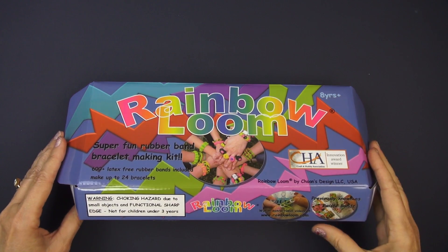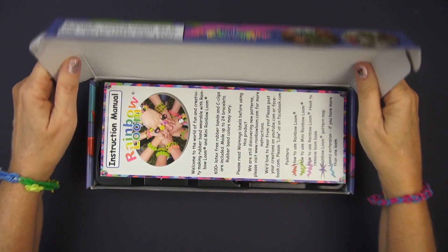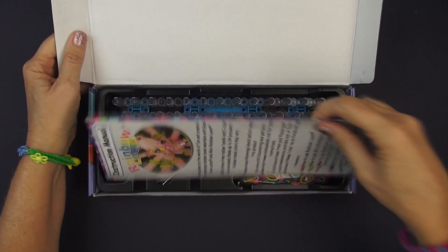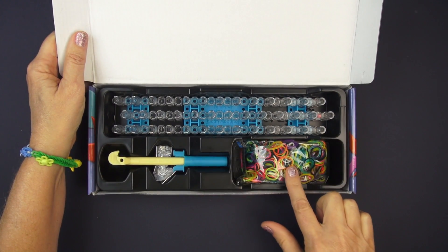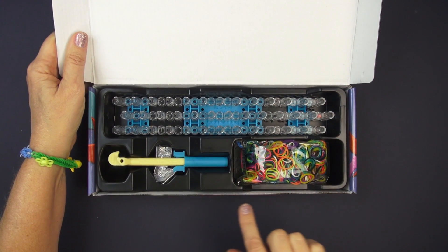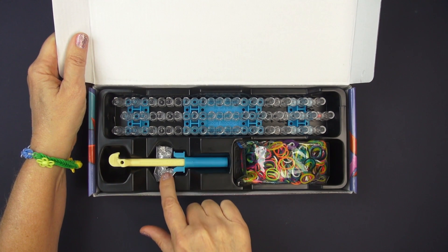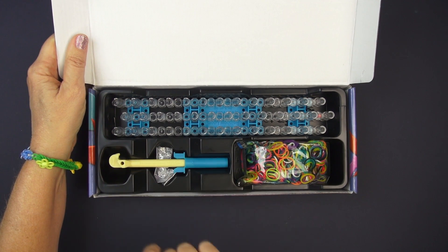With this rainbow loom set you get instructions which today you're not gonna need because I'm gonna help you. You're gonna get the loom, a set of rubber bands in lots of nice colors, plenty to do bracelets, the c-clips and this tool which I'll explain in detail in just a second.